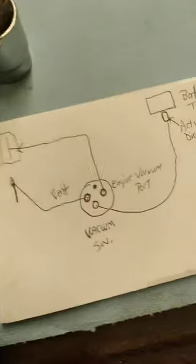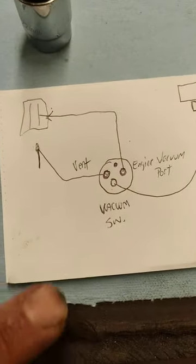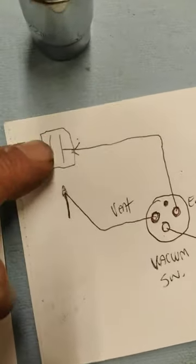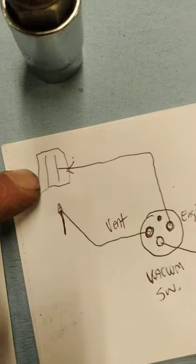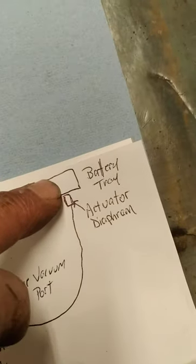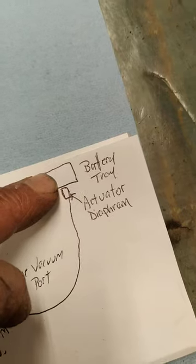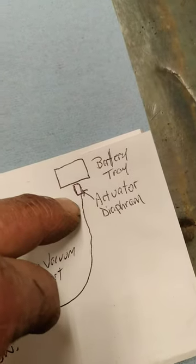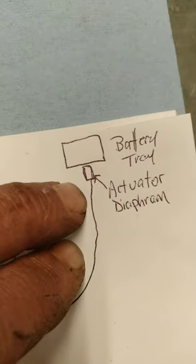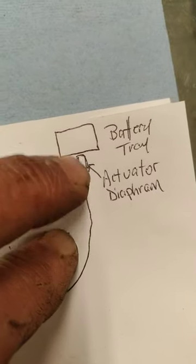Here's a little diagram I drew up real fast. This would be the vehicle's engine, this is where your battery is, and the actuator is mounted under the battery. So you have to remove the battery and the tray.